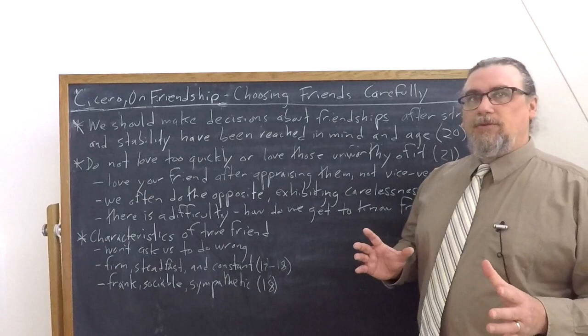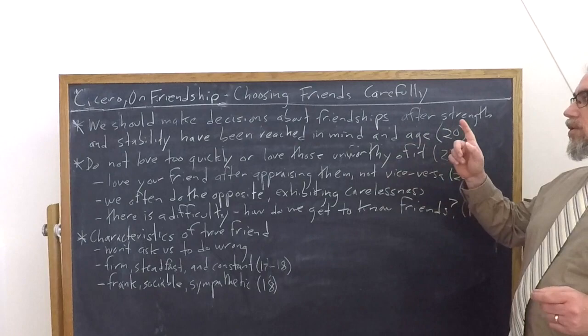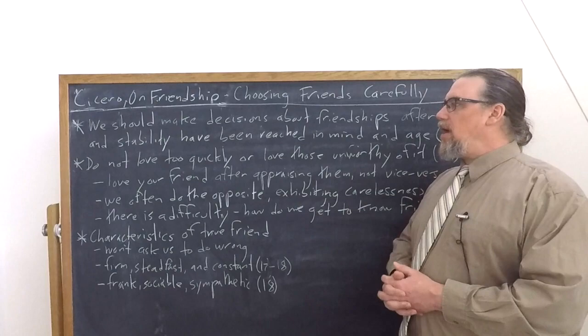Cicero's advice to us, as he says in chapter 21, do not love too quickly or love those who are unworthy of it. No indignantes, people who don't actually deserve that affection. How do we know that that's the case?